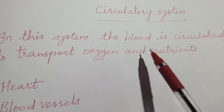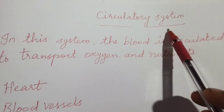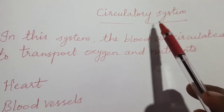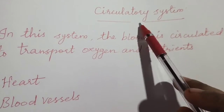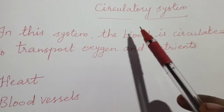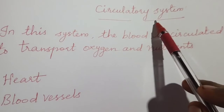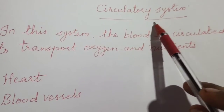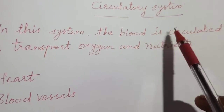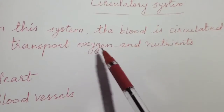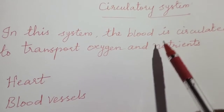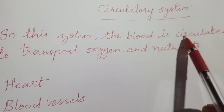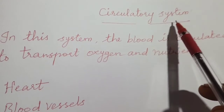Good morning students. Today we will discuss the topic: the circulatory system. The circulatory system is one of the organ systems where many organs work together to perform a specific function — circulating means supplying blood to all the parts of our body. The blood transports oxygen and nutrients, such as carbohydrates, proteins, etc.